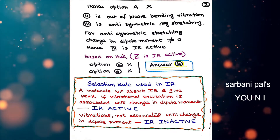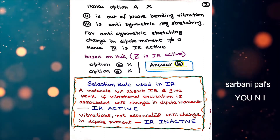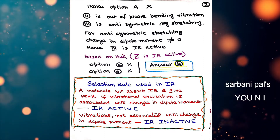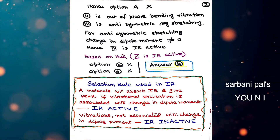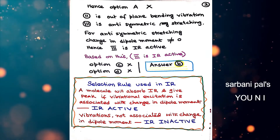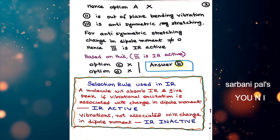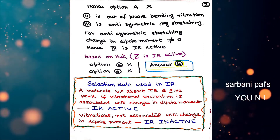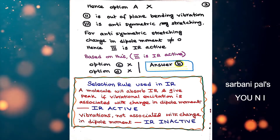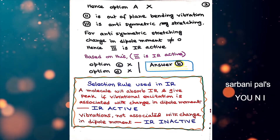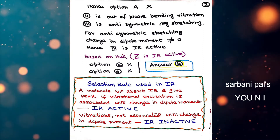In this regard, the selection rule of IR based on dipole moment: a molecule will absorb IR and give a peak if vibrational excitation is associated with a change in dipole moment — that peak is considered IR active. Vibrations not associated with a change in dipole moment are considered IR inactive and do not lead to any peak in IR.